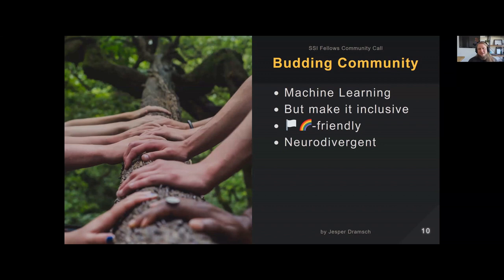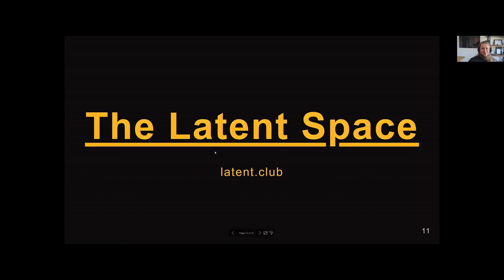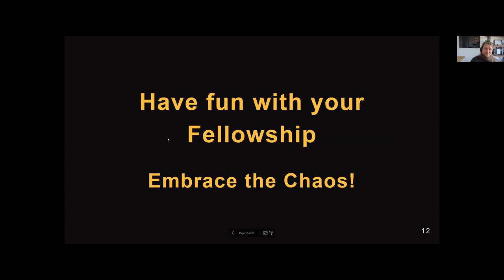The community I want to build is about machine learning — LGBTQIA+ friendly, queer friendly, neurodivergent-inclusive. The idea is: if you're tired of 'you're missing out if you don't use these five ChatGPT prompts,' that's the space I want to create, because I've been tired of that for a year. It's free — the domain and software are paid by the SSI. Don't know exactly what it will be yet, but grow together and see what comes of it. Have fun with your fellowship and embrace the chaos, because it goes to really nice places if you let it happen and share your stuff publicly.